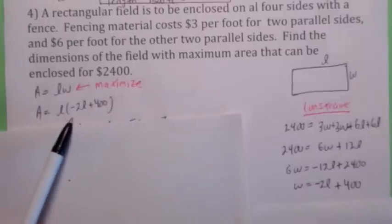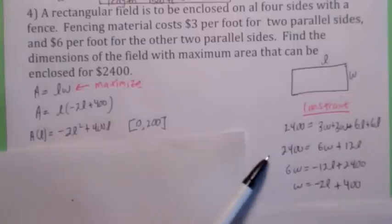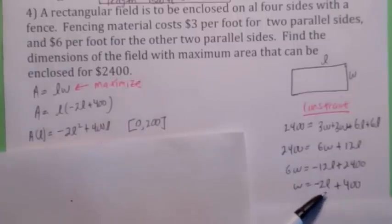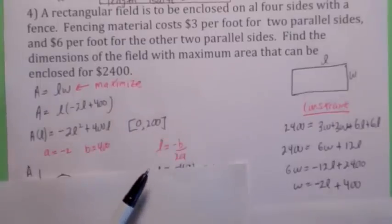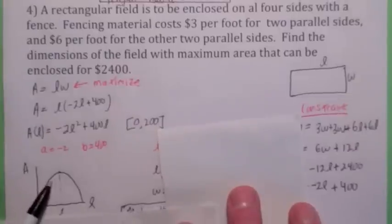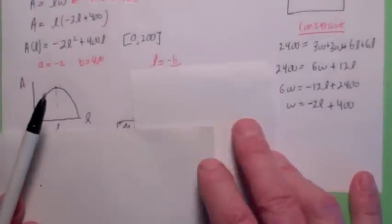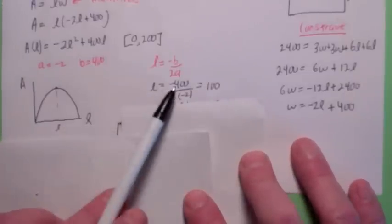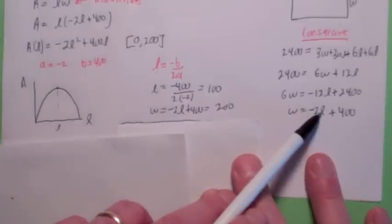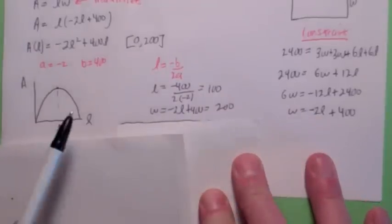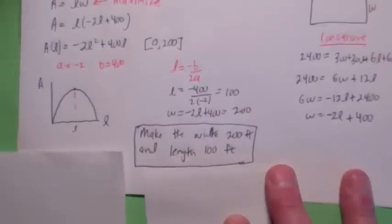We find the l coordinate of the vertex to get the length that gives maximum area. Negative b over 2a gives negative 400 over negative 4, which is 100. Now the width is negative 2 times 100 plus 400, which is 200. So this is a case where you don't get a square — if the width is 200 feet and the length is 100 feet, that gives the maximum area.